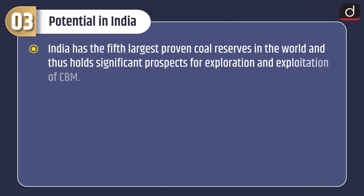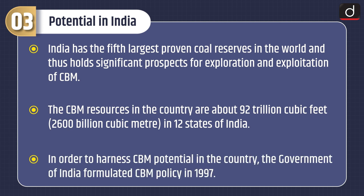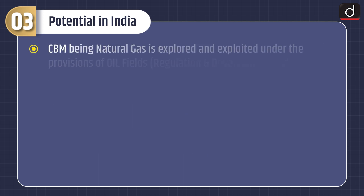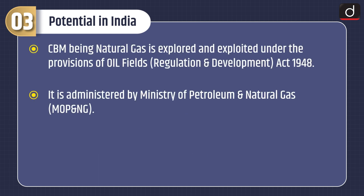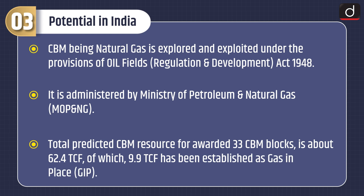Now its potential in India. India has the fifth largest proven coal reserves in the world and thus holds significant prospects for exploration and exploitation of CBM. The CBM resources in the country are about 92 trillion cubic feet, i.e. 2600 billion cubic meters, in 12 states of India. In order to harness CBM potential in the country, the Government of India formulated a CBM policy in 1997. CBM, being natural gas, is explored and exploited under the provisions of the Oil Fields Regulation and Development Act 1948.